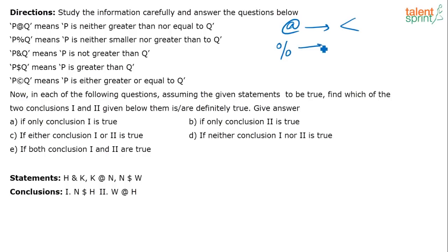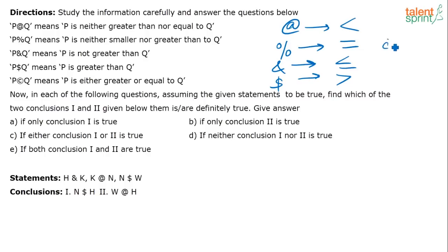Similarly, take '%': P is neither smaller nor greater than Q — that means P is equal to Q, so '%' stands for the equal to symbol. Similarly, '&': P is not greater than Q means P is either less than or equal to Q, so '&' stands for less than or equal to. '$' means P is greater than Q, so '$' stands for greater than. And there is one more symbol: P is either greater or equal to Q, so that stands for greater than or equal to. Write this down and then go about solving the question.